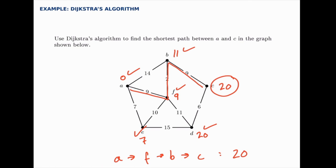So that's Dijkstra's algorithm. It's this expanding web that starts at the start point and expands out in concentric rings, where you pick the next shortest distance node and update all of its neighbors. As long as you continue that process you'll get the answer relatively quickly.